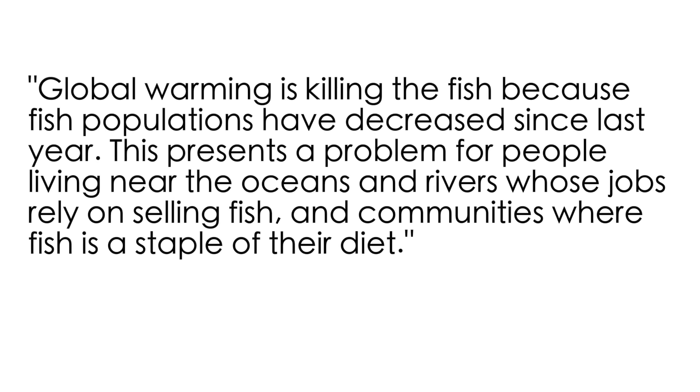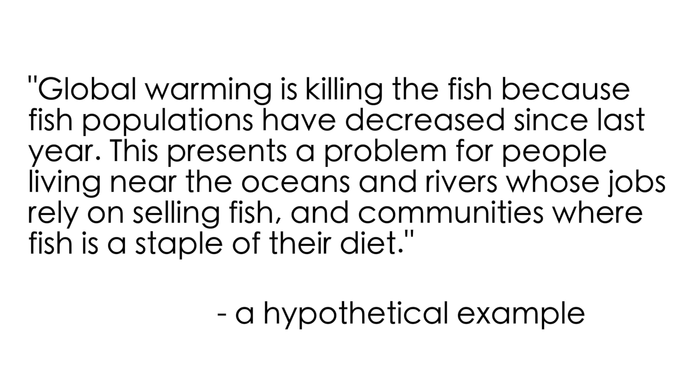The first thing I notice when reading student papers is that they tend to write more about society issues than actual science. For example, global warming is killing the fish because fish populations have decreased since last year — this presents a problem for people living near oceans and rivers whose jobs rely on selling fish, and communities where fish is a staple of their diet. The problem with this example is that there's no explanation of the mechanisms at work. How exactly is global warming related to the dropping fish populations? It's not mentioned at all; in fact it spends most of its time explaining how bad the effects are for people. This may be acceptable for subjects which focus on social issues, but not for science. Stick to the science, not so much about the social issues.